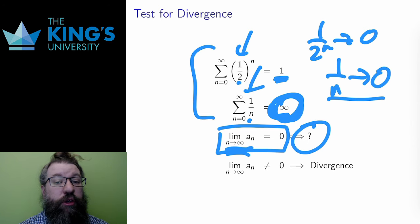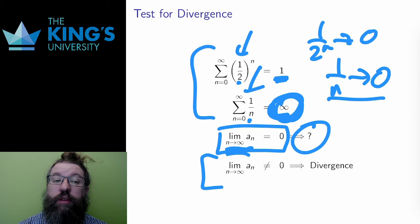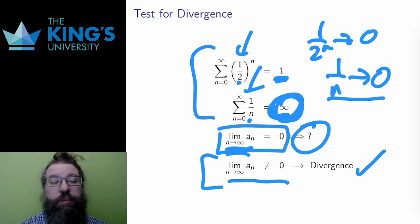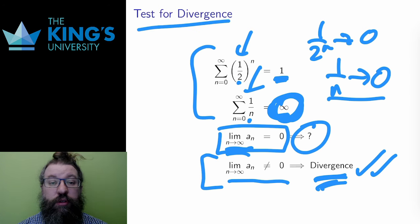Thankfully the converse does help. If the limit of the terms is not zero, then it's impossible for the series to converge. And this is called the test for divergence, and it's the first of many techniques to study whether or not a series converges. The first thing I will do with almost any series is to look to see if the limit of the terms is zero. If it isn't, the series will diverge. I don't need to do anything else.